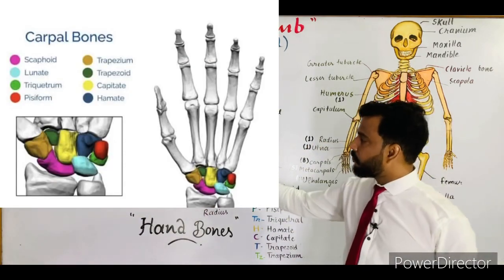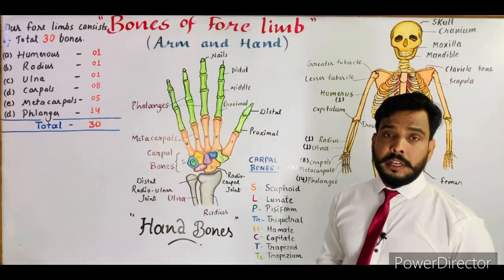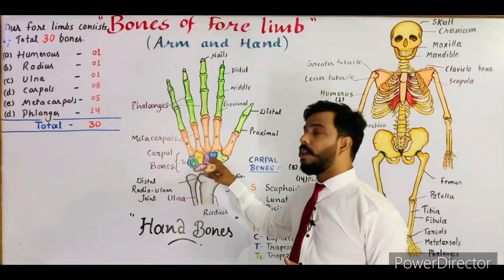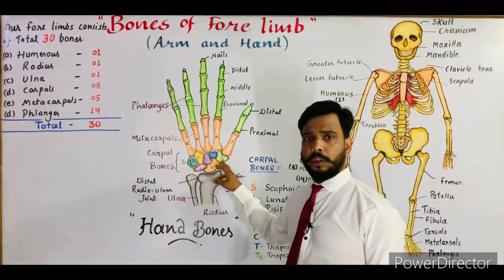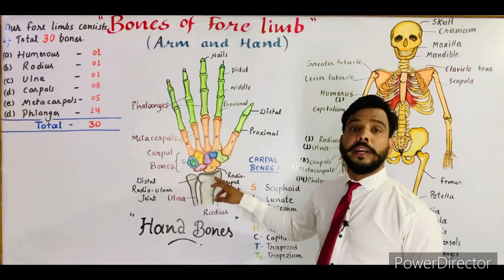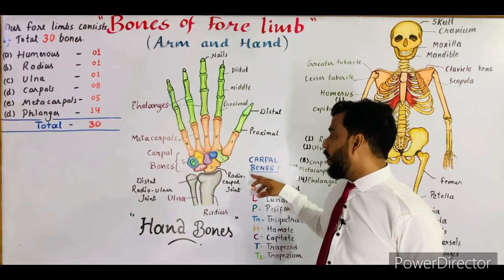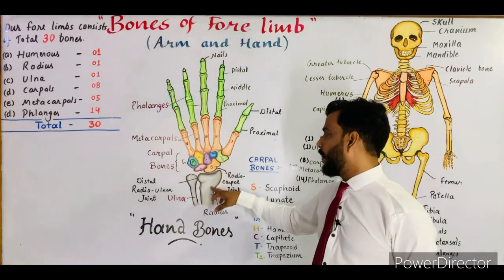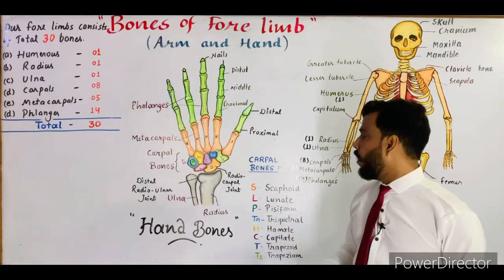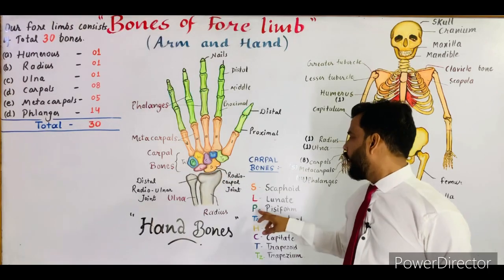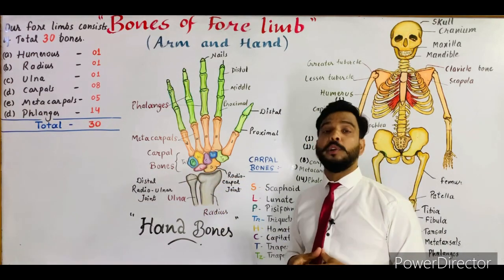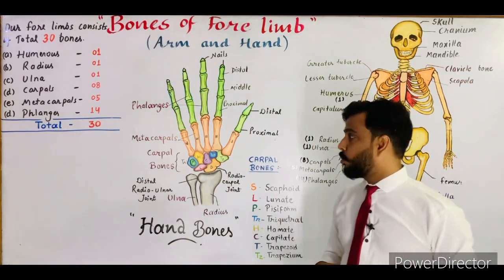Next are the carpal bones. As you can see in this diagram, the carpal bones are eight in number and arranged in two rows: the proximal row and the distal row. Each row consists of four bones. The proximal carpal bones attach with the radius bone — not the ulna bone — through a joint known as the radio-carpal joint. The four proximal carpal bones are: scaphoid, lunate, pisiform, and triquetral. These form the radio-carpal joint, also called the wrist joint.